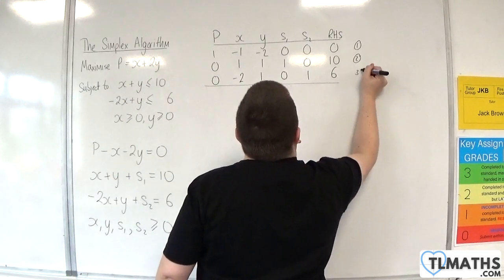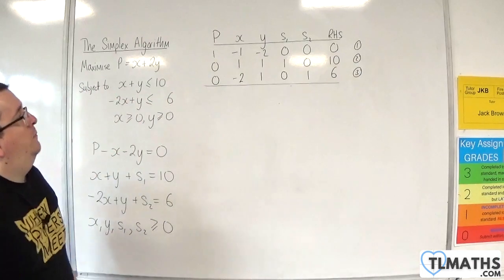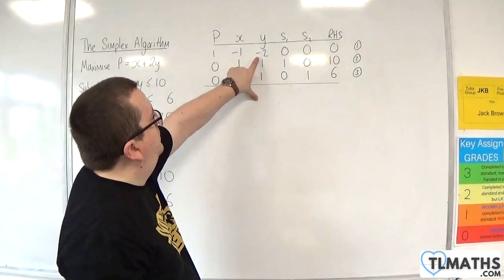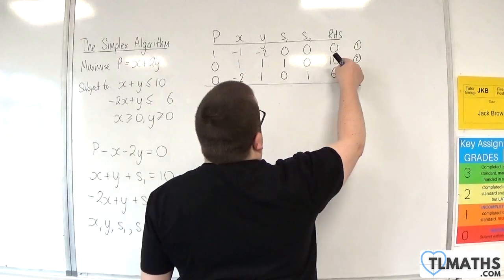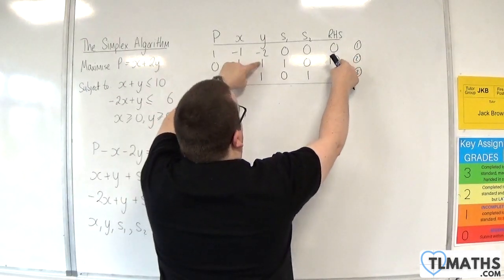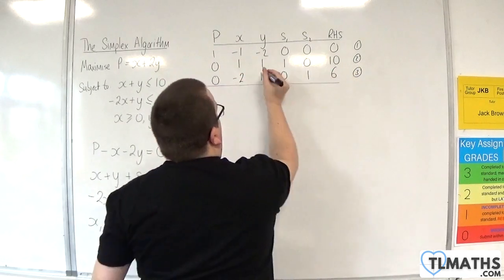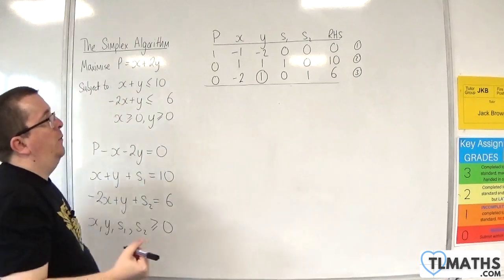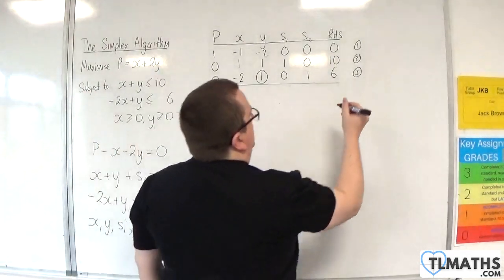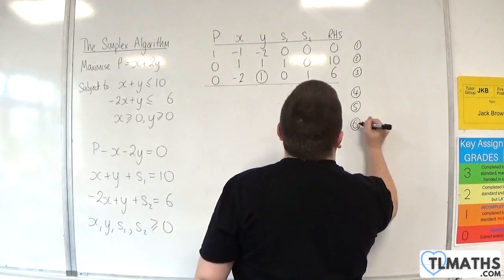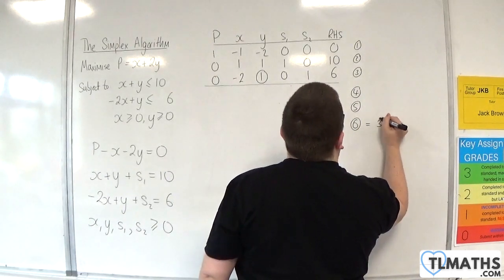All right, well, we'll look for the most negative in the top row, which is the minus 2. Then do the ratio test. 10 divided by 1 is 10. 6 divided by 1 is 6. So that one gives me the smaller amount. So I'll use that one as my pivot. So 4, 5, 6. And I don't need to do anything to number 6. It's just the same as number 3.